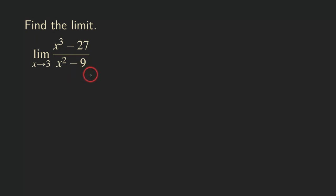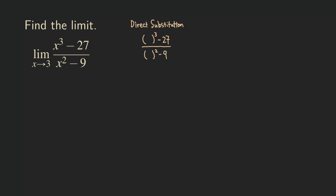So usually when we start a limit problem, the first step is to try to plug in the number and see what's going on. This is called direct substitution. So let's try direct substitution right here. We're going to write down the form of the function — x cubed minus 27 divided by x squared minus 9 — and plug in 3 into the x's. If we run into an indeterminate form of 0 over 0, then we're going to try a different technique for finding the limit.